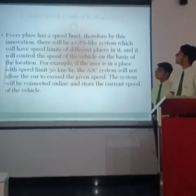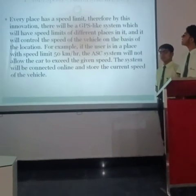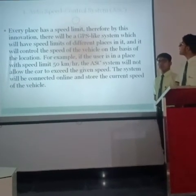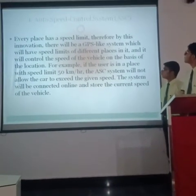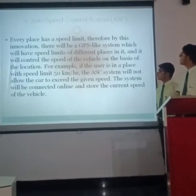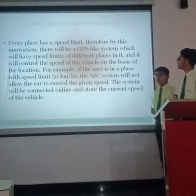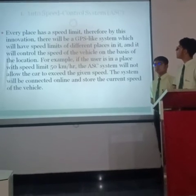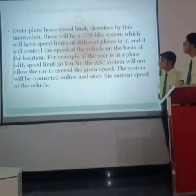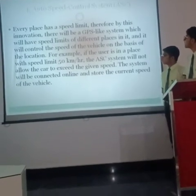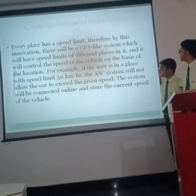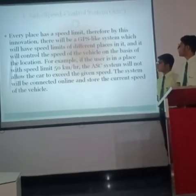The first one is Auto Speed Control System. Every place has a speed limit. By this innovation, there will be a vehicle-like system which will have speed limits of different places stored in it, and it will control the speed of the vehicle based on the location. For example, if the user is in a place with a speed limit of 50 km per hour, the system will not allow the car to exceed 50 km per hour. The system will be connected online and show the current speed of the vehicle.